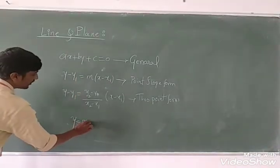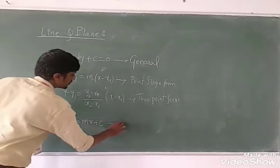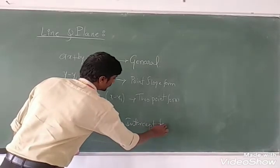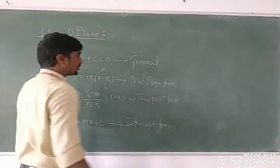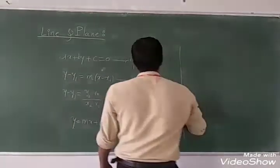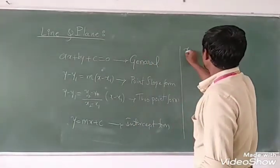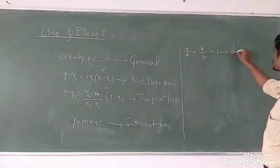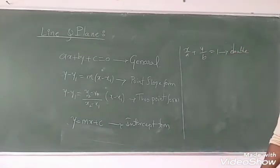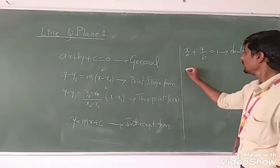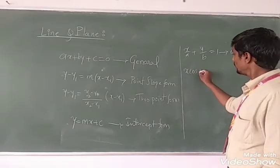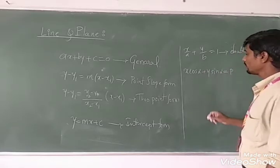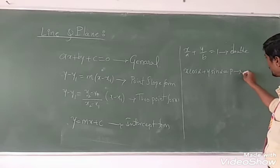We have another form: y equals mx plus c, which is the slope-intercept form. We also have the double intercept form: x/a plus y/b equals 1. And we have the normal form: x cos α plus y sin α equals p.